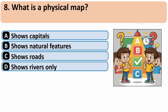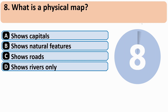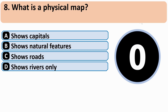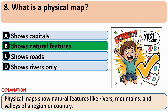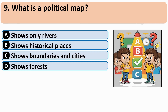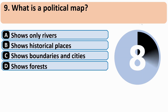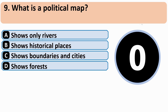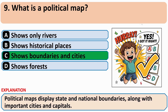What is a physical map? The correct answer is B — it shows natural features. What is a political map? The correct answer is C — it shows boundaries and cities.